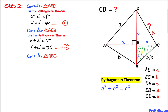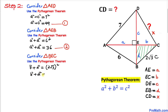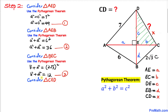Now let's focus on triangle BEC. This is a right triangle, and BC is the longest leg. Applying the Pythagorean formula gives us b² + d² = (2√3)², which simplifies to b² + d² = 4 × 3 = 12. Let's call this equation number three.